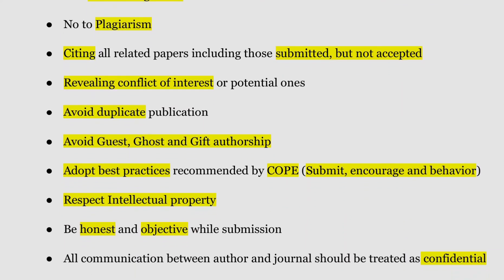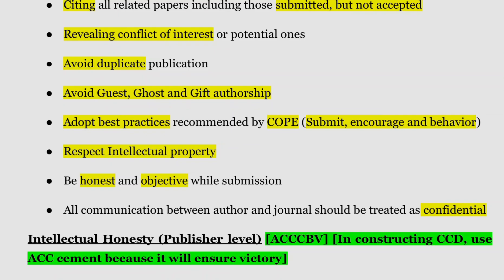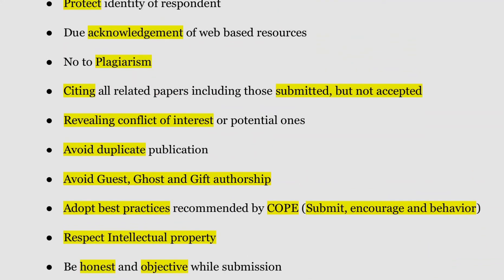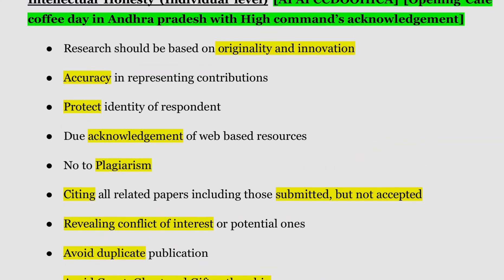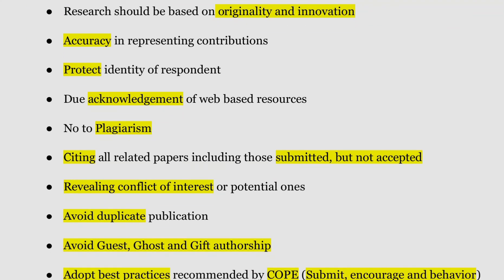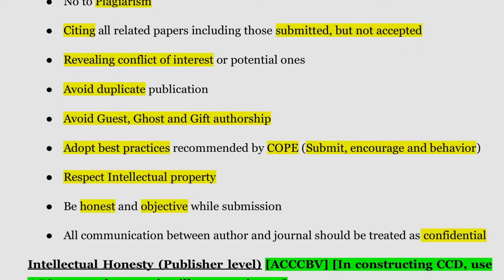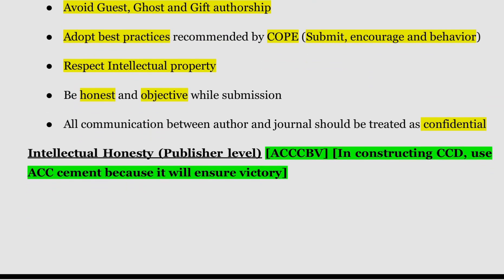Also at the individual level: reveal conflicts of interest or potential ones, avoid duplicate publication, avoid guest, ghost, and gift authorship, adopt best practices recommended by COPE, respect intellectual property, be honest and objective during submission, and treat all communication between author and journal as confidential. You can remember these as a story — starting from originality and innovation, through accuracy, acknowledgement, no plagiarism, citing references, conflict of interest, avoiding duplicates, and adopting best practices.